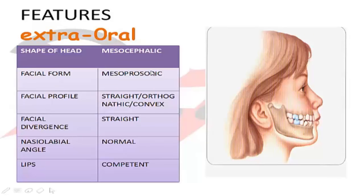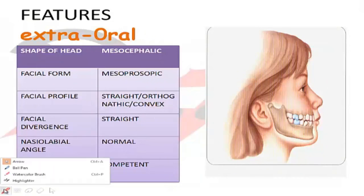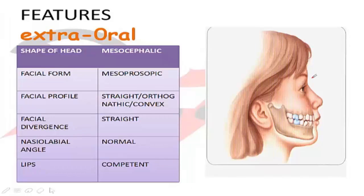Coming to facial form, it will be mesoprosopic, meaning an average face. The facial profile will be straight or convex. Facial profile can be assessed clinically or by taking a lateral view of the patient. You mark three points: soft tissue glabella, soft tissue point A (the deepest point), and soft tissue chin or pogonion. If joining these three points gives a straight line, it is an orthognathic or straight profile. If you get a convex angle, it is a convex profile. Class 1 molar relationship malocclusions usually have a straight or slightly convex profile.